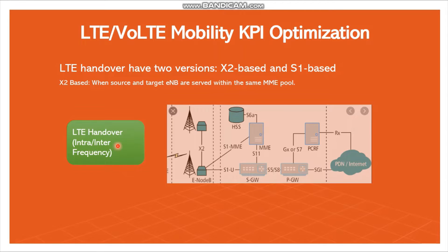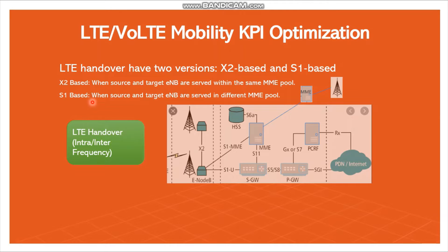LTE intra or inter frequency handovers have two versions: X2-based and S1-based. X2-based handover occurs when two eNodeBs are connected via the X2 interface, and it happens when both source and target eNodeBs are connected in the same MME pool. S1-based handover occurs when source and target eNodeBs are served by different MME pools — one eNodeB belongs to one MME and another belongs to a different MME, so the S1 interface comes into the picture.